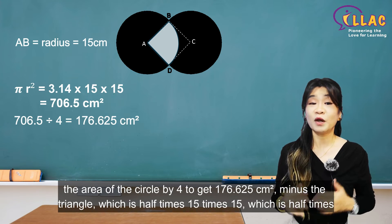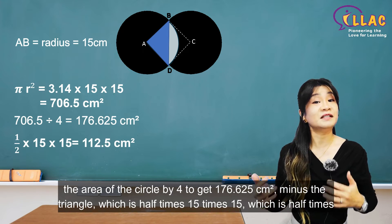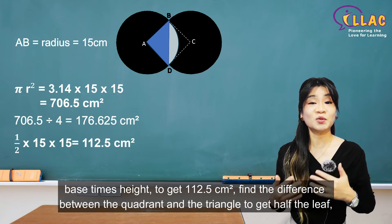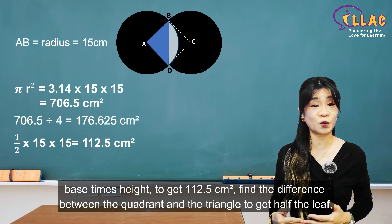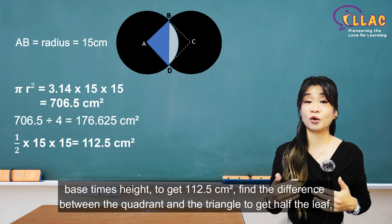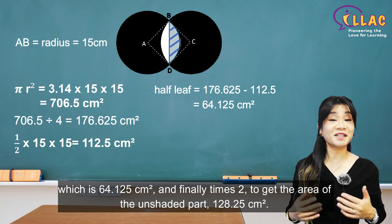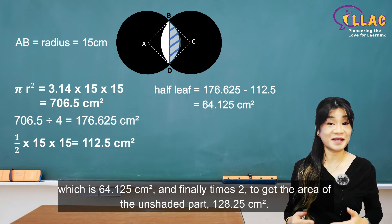Minus the triangle, which is half times 15 times 15, which is half times base times height, to get 112.5cm square. Find the difference between the quadrant and the triangle to get half the leaf, which is 64.125 square centimeters.